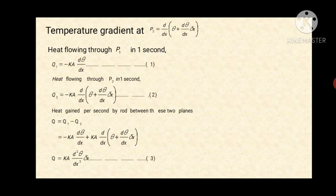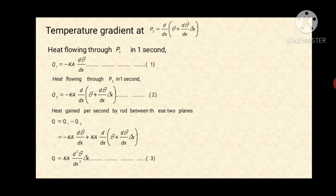Now the heat flowing through plane P1 in one second is denoted by Q1. The heat flowing through plane P2 in one second is Q2, which equals minus KA · d/dx of [θ + (dθ/dx)·Δx]. This is equation two. Now we have to calculate the heat gained per second by the rod between the two planes P1 and P2, which is given by Q = Q1 minus Q2.